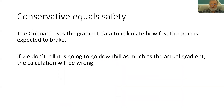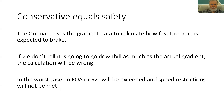When we're doing the gradient data for ETCS, we have to be conservative. We have to remember the onboard is going to use this to calculate how fast the train is expected to brake, potentially in an emergency. So if we don't tell it the train is going downhill as much as the actual gradient, then the calculation will be wrong. In the worst case, the train might exceed the end of authority or supervised location, because although the driver is braking correctly, the calculations were wrong and the driver was guided to brake too late. Or we might not obey all of the speed restrictions on the route, because the train is not supervised to slow in time.